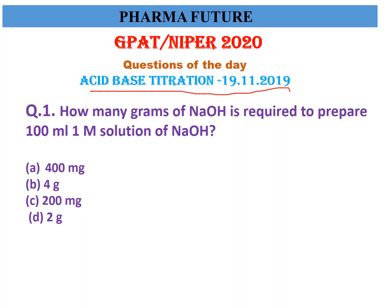Today's quiz topic is acid-base titration. First question: how many grams of NaOH are required to prepare 100 ml of a one molar solution of NaOH? NaOH contains three atoms — Na (atomic weight 23), oxygen (16), and hydrogen (1) — totaling 40. So 40 grams of NaOH dissolved in 1000 ml gives a one molar solution.